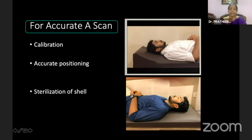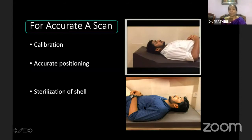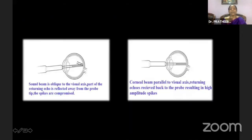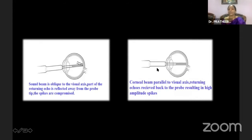For an accurate A-scan, proper calibration is mandatory, accurate positioning of the patient is very important, and proper sterilization of the shell is important. The patient must lie supine without any tilt — when there is head tilt, the sound beam is oblique to the shell axis, part of the returning echoes is reflected away from the probe tip, and spikes are compromised. When the patient looks straight, most echoes are perceived by the probe, giving good quality spikes and a proper axial length.